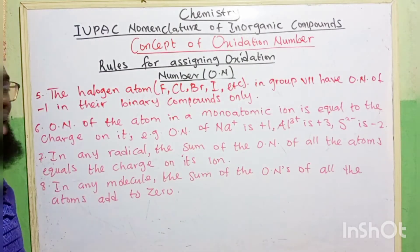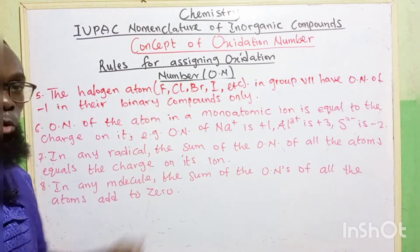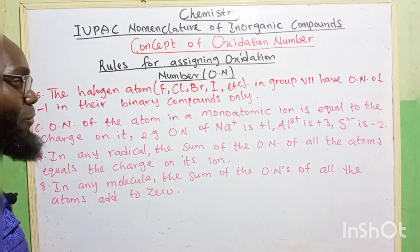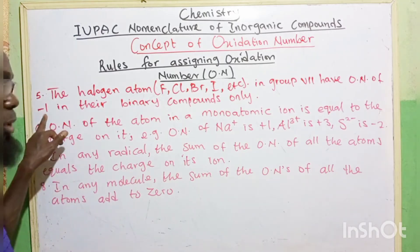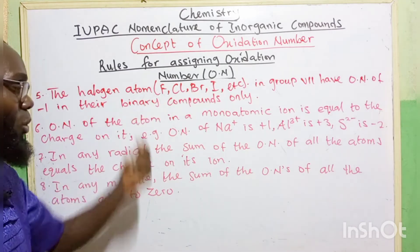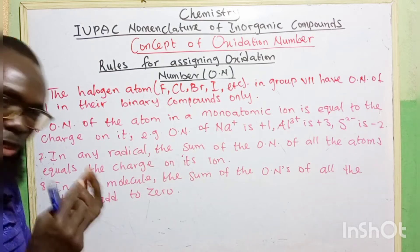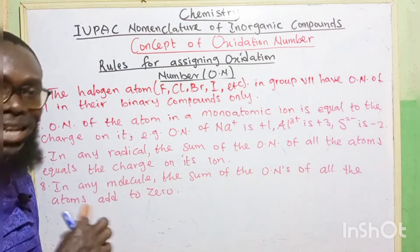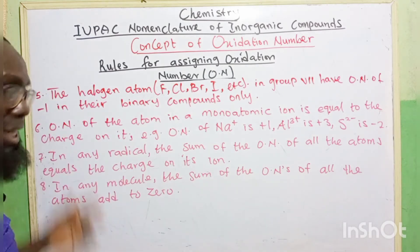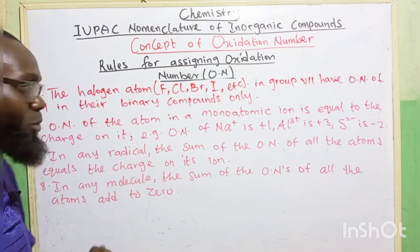Number five: the halogens — fluorine, chlorine, bromine, iodine, etc. — in group seven have an oxidation number of minus one in their binary compounds only. That is, when fluorine, chlorine, bromine, iodine occur in their binary compounds — when they are joined with any other element — their oxidation number is equals to minus one. But when they are standing alone in their free state, it equals zero.